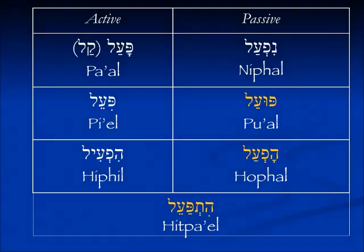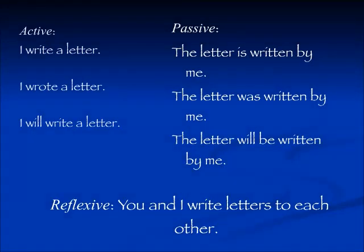Today we're going to cover the pu'al, the ho'fal, and the hitpa'el. Remember that the pu'al and the ho'fal are passive voices. That means that something happens to the subject of the sentence — the subject receives the action. Remember there is a difference between tense, which is past, present, and future, and whether the verb is active, passive, or reflexive. So an active verb can appear in the past, present, or future. Today we're doing passive verbs.